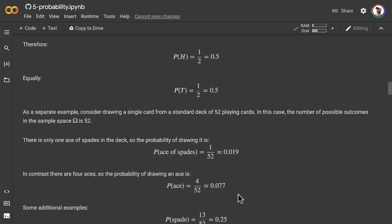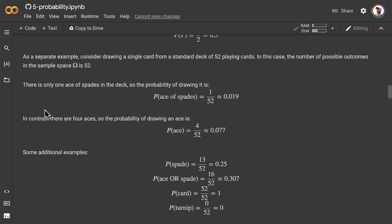In contrast, there are 4 aces, and so the probability of drawing an ace is 4 in 52, which comes out to a probability of about 0.08 or about 8%. The probability of drawing a spade is 13 in 52. So of the 52 cards in a standard card deck, 13 of those are spades, 1 in 4, which comes out to a probability of 0.25 or 25%.